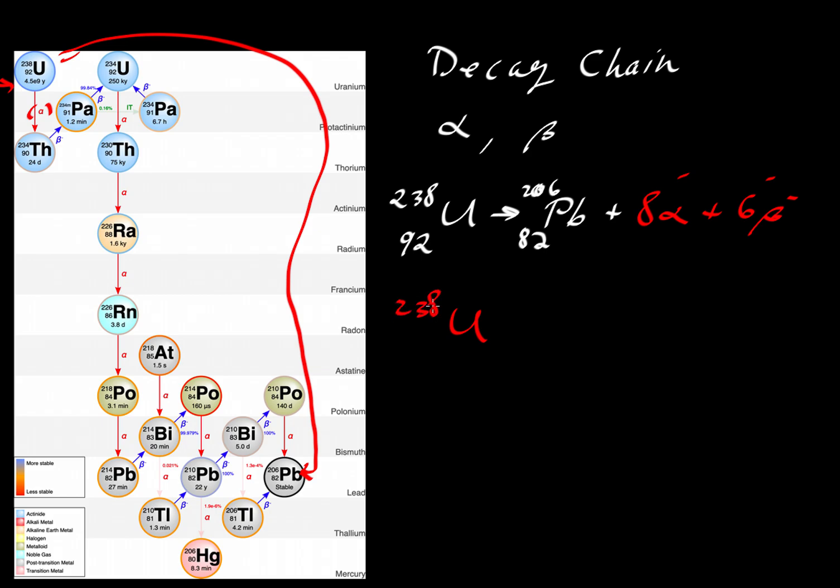Uranium-238 with an atomic number of 92 turns into thorium-234 with an atomic number of 90. And if you go back and look at our video on alpha decay, you'll note that this is consistent with that idea. We have a helium nucleus, an alpha particle that has two neutrons and two protons. So the atomic mass decreases by 4, and with the release of two protons, the atomic number decreases by 2. So that's the first decay step.